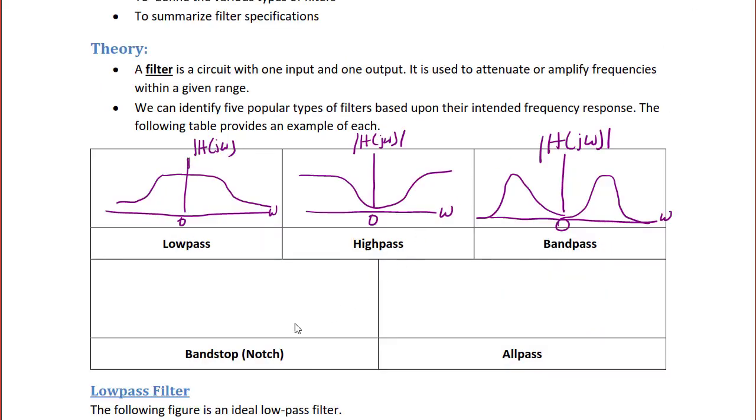The next one is a band-pass filter which only passes frequencies in a certain band. So it would have the following shape. The next one is a band stop or a notch filter. And it passes frequencies outside of a certain band. So it looks like this. And the last one is an all-pass filter. And as you can imagine, it passes all frequencies.